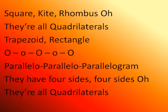Square, kite, rhombus — they're all quadrilaterals. Trapezoid, rectangle. Parallelogram, they have four sides, four sides. They're all quadrilaterals.